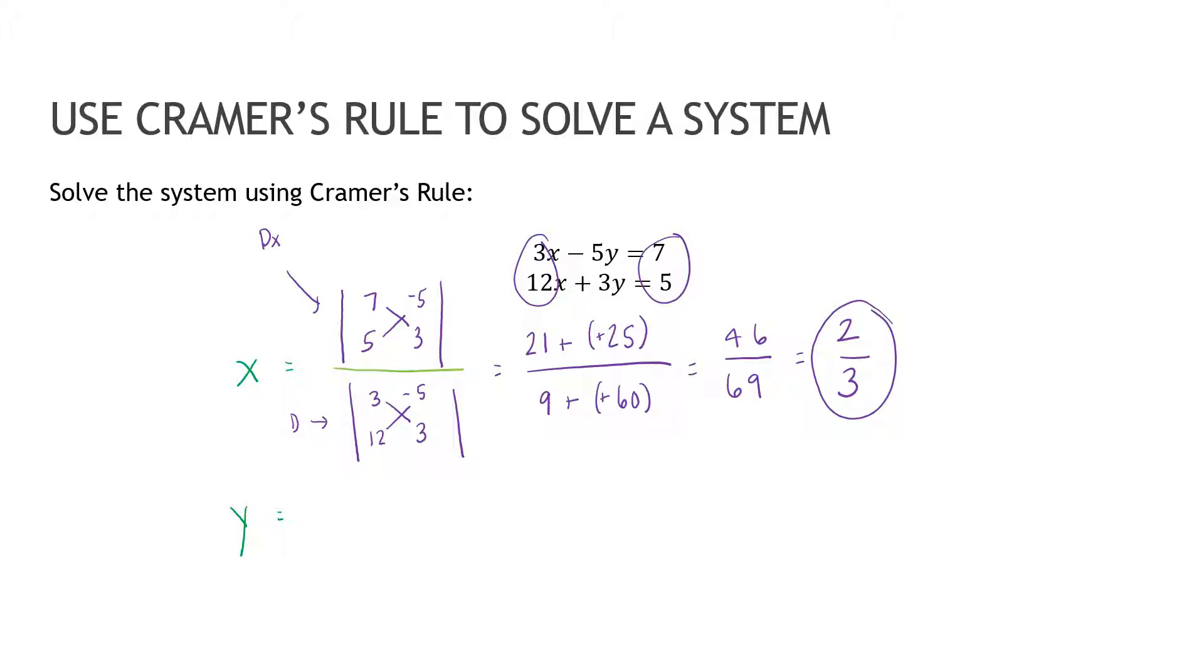The Y solution, again, the denominator will be the exact same thing. The numerator is that the X column will be the same, whoops, three twelve. But the Y column is now replaced by the seven five.